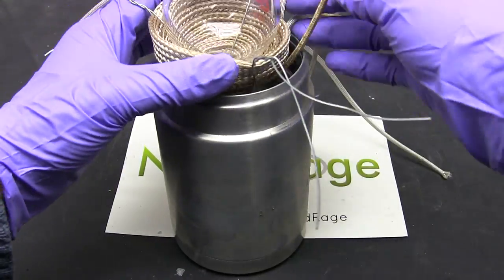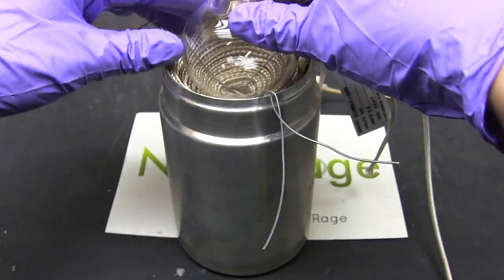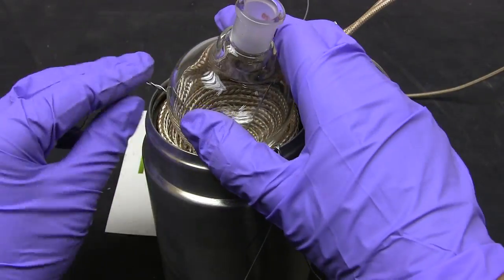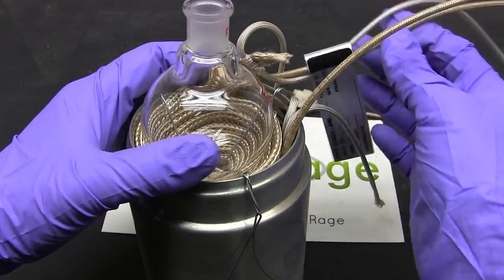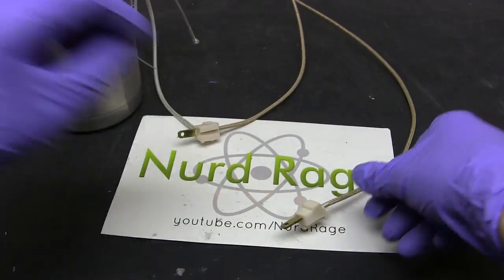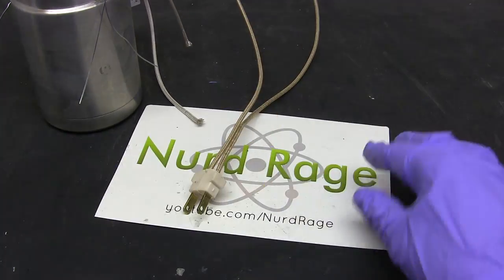Now place the assembly in a steel thermos for thermal insulation. Bend over the iron wires as they will support the heating tape. And there you have it, a basic heating mantle. Just assemble the power prongs and this is ready for use.